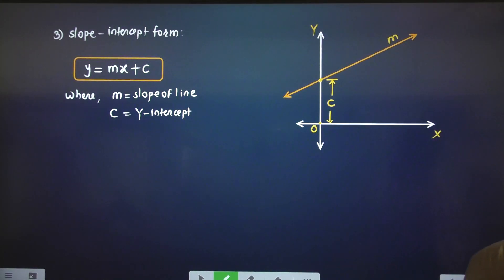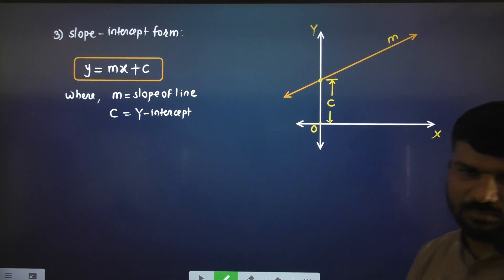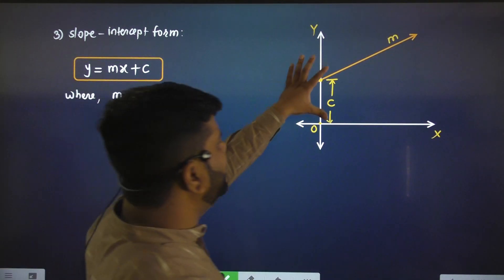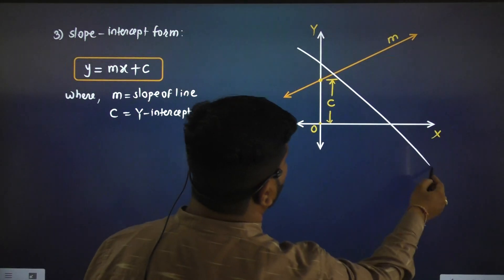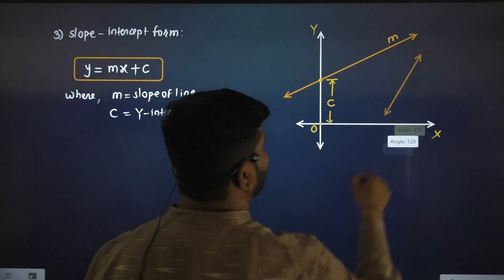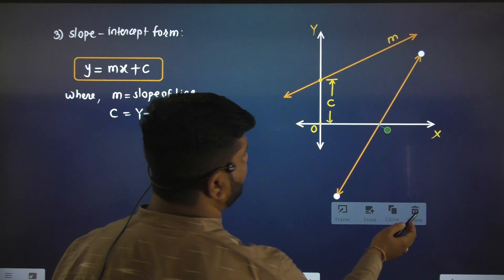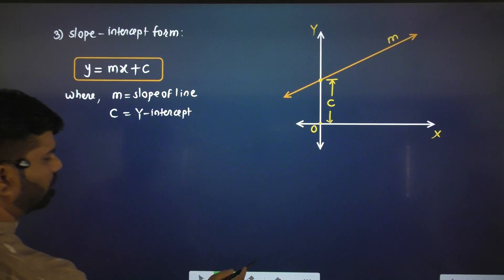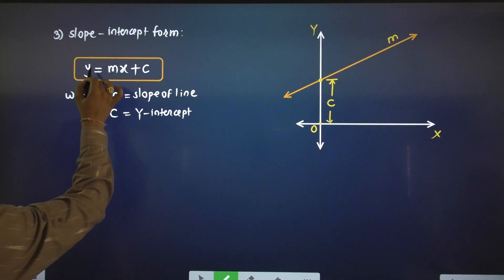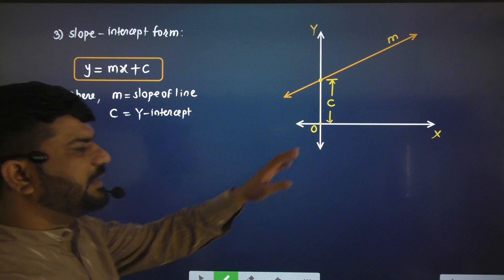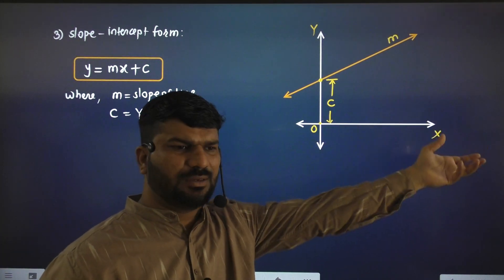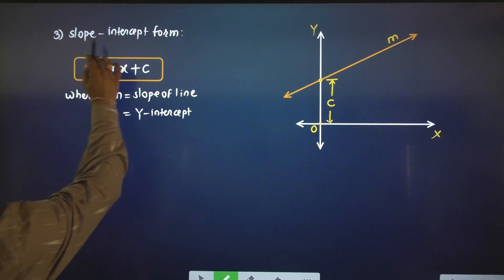This is called the slope-intercept form, and this is the third form. Now, if we have the x-intercept — suppose the line cuts the x-axis — at that time you interchange x and y. So x equals my plus c, where c is the x-intercept. This is the slope-intercept form.